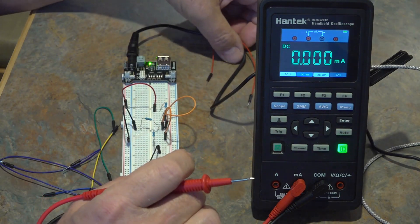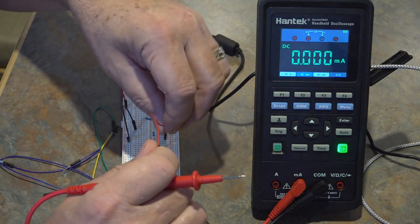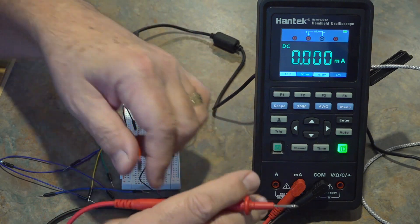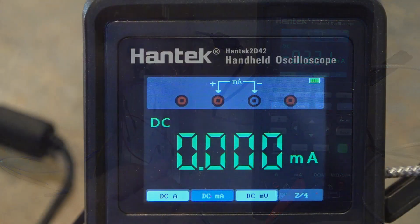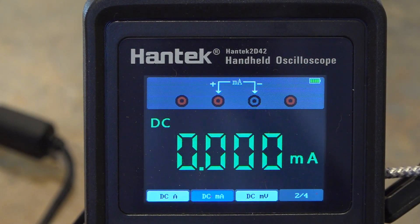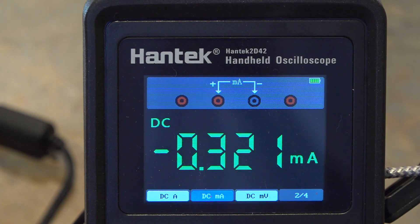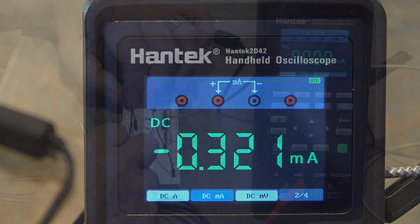And then I'm going to take the 3.3 volts and hook that up to the positive side and there I have negative 0.321 milliamps and that negative is indeed correct. Hook that back up.